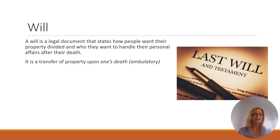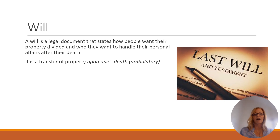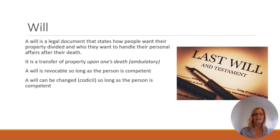One thing to keep in mind is it's what we call ambulatory — you might want to write that word down. Ambulatory means that the transfer of property is upon one's death. That is different from most trusts, where the transfer of property occurs at the creation of a trust. A will is revocable as long as the person is competent, because it isn't actually transferring property until someone dies. And it can be changed, and that is called a codicil, so long as the person is competent.